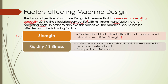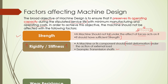Next is rigidity. A machinery component should resist deformation. For example, a beam: with a short, stiff beam the rigidity is maximum, the bending is minimum. Under external load, it resists deformation. Another example is a transmission shaft.